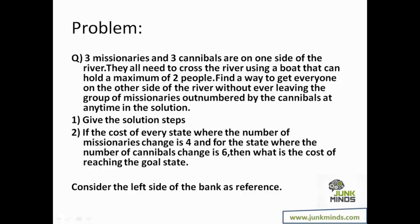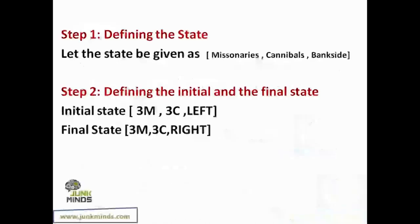Points are assigned for each step depending on whether the number of missionaries or cannibals is changing. We define the state as (missionaries, cannibals, bank side — left or right). The initial state is three missionaries, three cannibals on the left side. The final state is three missionaries, three cannibals all on the right side.